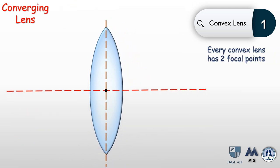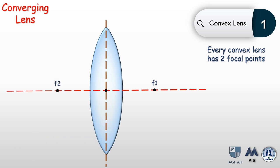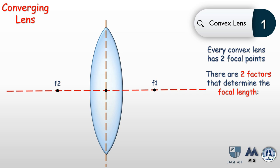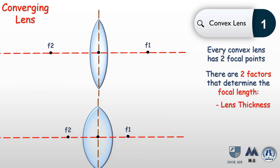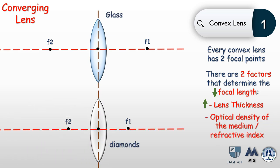Every convex lens has two focal points, one on each side, due to the symmetrical structure of the lens. If parallel rays come from one side, they go to the first focal point; from the other side, they go to the other focal point. Two factors determine the focal length: first, lens thickness — the thicker the lens, the shorter the focal length. Second, the optical density or refractive index of the medium — for example, a diamond lens has a higher refractive index than glass, so its focal point is closer to the center.